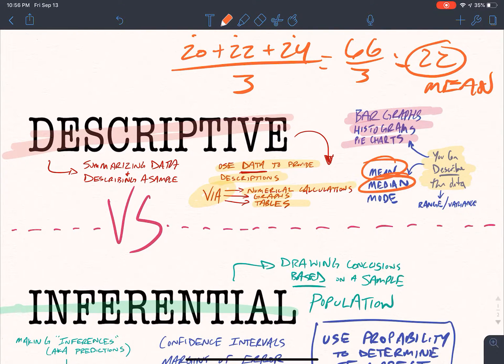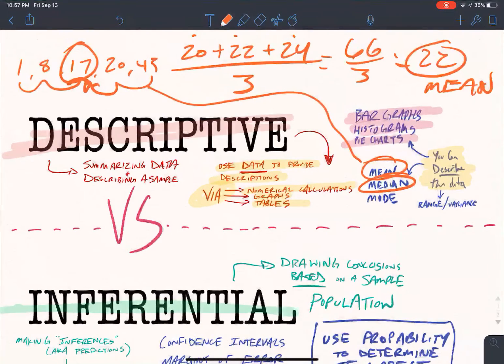Now, median, that's your middle number. So if I had 1, 8, 17, 20, and 45, my middle number is 17. So that's my median.